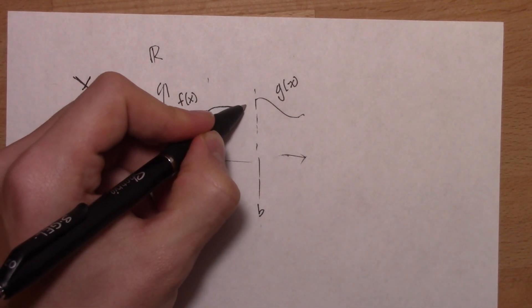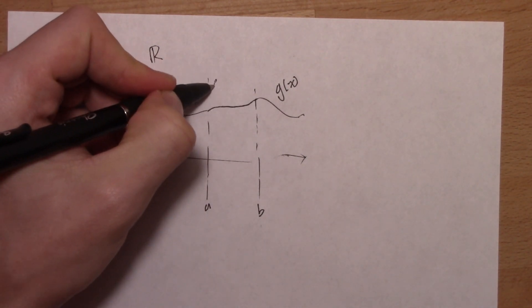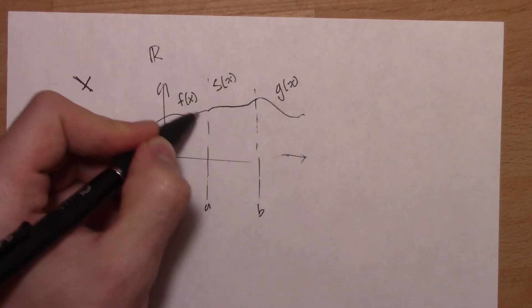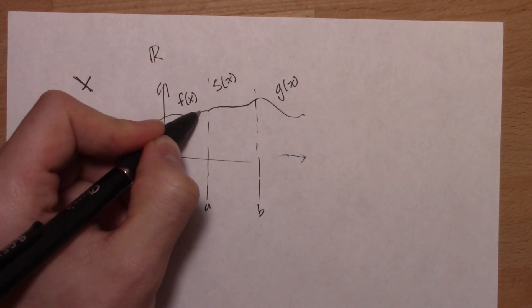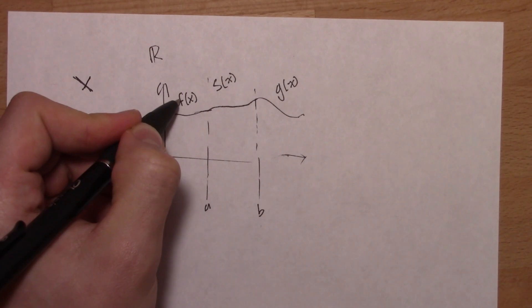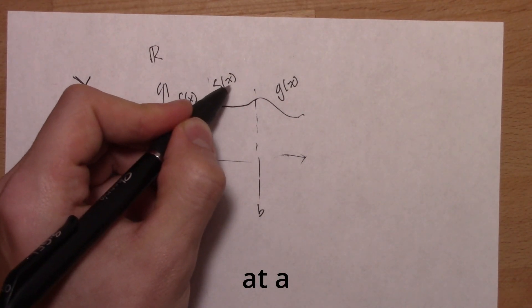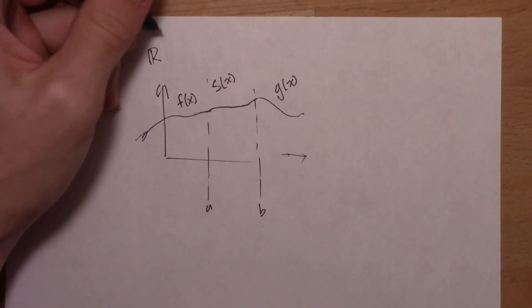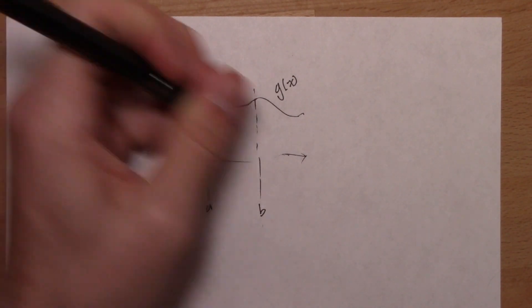What is this spline s such that there's a smooth connection between f and s and s and g? This is r squared, this is y, this is x.